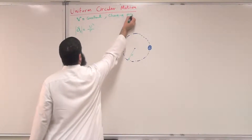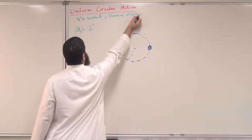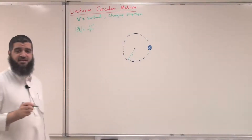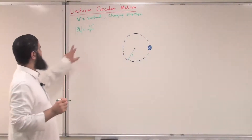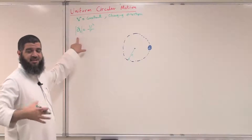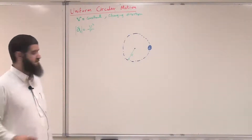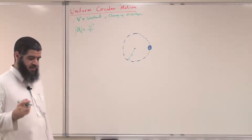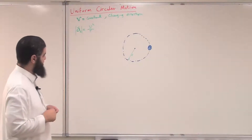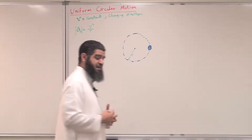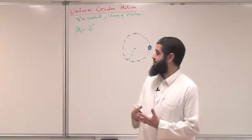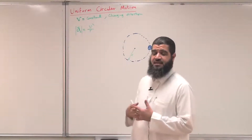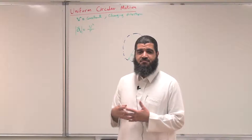The velocity is changing because the direction of the velocity is not constant. This is why we have acceleration — acceleration is the rate of change of velocity. This has been discussed before in kinematics, but now let us talk about the dynamics.